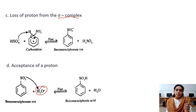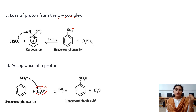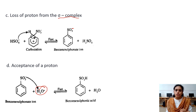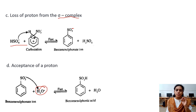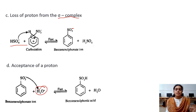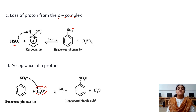In the electrophile generation step, SO3 and HSO4- and H3O+ were formed. SO3 was used in step 2, HSO4- in step 3, and H3O+ is used in step 4 to neutralize SO3- to give -SO3H. The final product is benzene sulfonic acid.